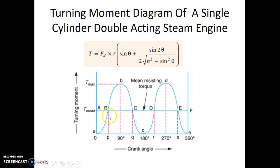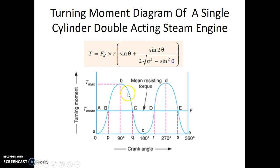Let us examine what the area below this curve represents. On the y-axis we have the value of torque and on the x-axis we have the angle rotated by the crank. If we take this angle in radians, the area is obtained as a product of turning moment and angle in radians. This product is nothing but work done, which we had learned earlier. So, any area below this turning moment curve gives us the work done by the working fluid or the steam on the crankshaft of the engine.